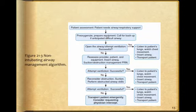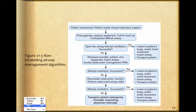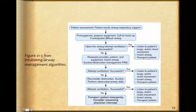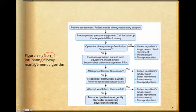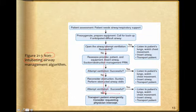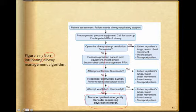Figure 21.3 — non-intubated airway management algorithm. You have assessed your patient and concluded intubation is not required. Steps: patient assessment, patient needs airway or respiratory support, pre-oxygenate, open the airway, assess whether it was successful, listen to the patient's lungs. If successful, transport. If ventilation attempts are unsuccessful all the way down, transport emergently and consider requesting a physician intercept — particularly if you do not have the ability to facilitate an intubation.